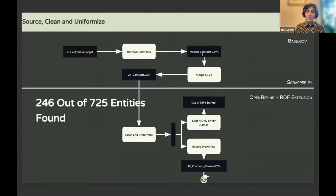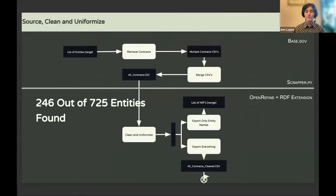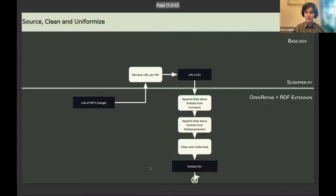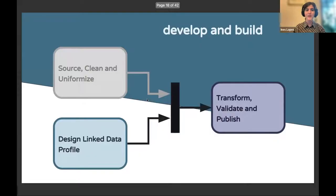From 725 organizations mentioned in the interest registers, 246 were found to be involved in contracts either as suppliers or contractors. All of that was extracted, cleaned, and uniformized — much easier than with the previous dataset — and saved in CSV ready for transformation. Some extra steps gathered additional data available on base.gov about companies, like addresses and unique fiscal identifiers.